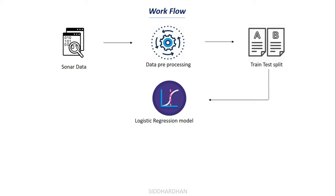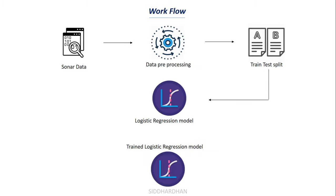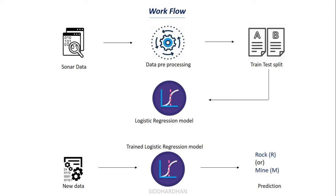This is a binary classification problem because we are predicting whether the object is a rock or a mine. We will use logistic regression, which is a supervised learning algorithm. Once we train our model with the training data, we get a trained logistic regression model. This model has learned from the data how a metal cylinder will appear versus how a rock will appear based on sonar data. When we give it new data it can predict whether the object is a rock or a mine.